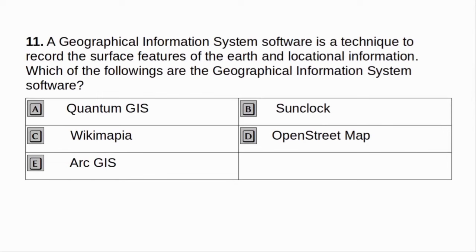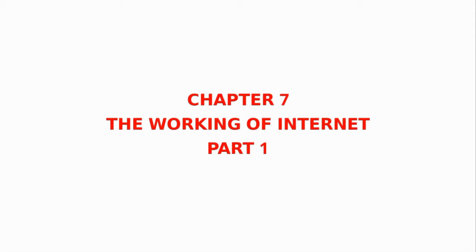A geographical information system software is a technique to record the surface features of the earth and locational information. Which of the following are the geographical information system software? A. Quantum GIS. B. SunClock. C. Wikimapia. D. OpenStreetMap. E. ArcGIS. Answer: A and E.